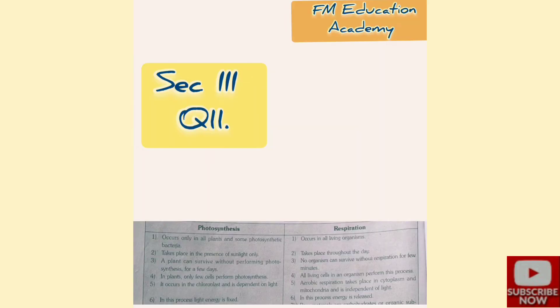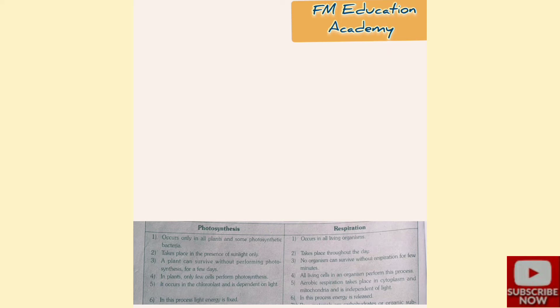Question 11: write the differences between photosynthesis and respiration (8 marks). Photosynthesis occurs only in plants and some photosynthetic bacteria; respiration occurs in all living organisms. Photosynthesis takes place only in the presence of sunlight; respiration takes place throughout the day. A plant can survive without performing photosynthesis for a few days; no organism can survive without respiration. In plants, only a few cells perform photosynthesis; all living organisms perform respiration.